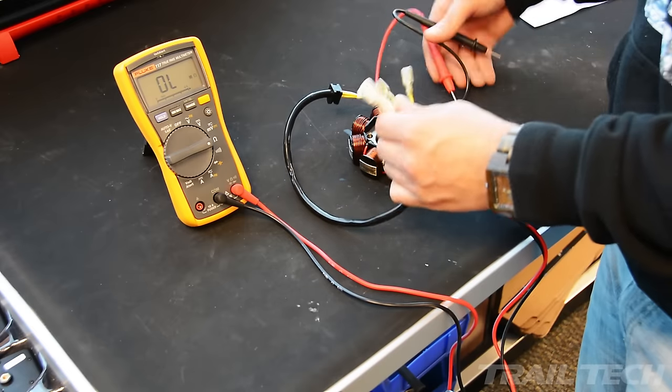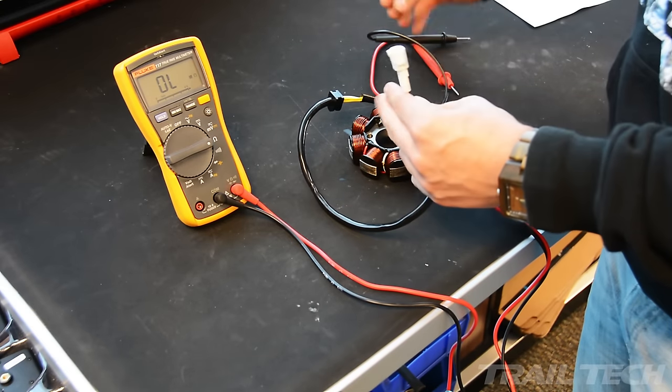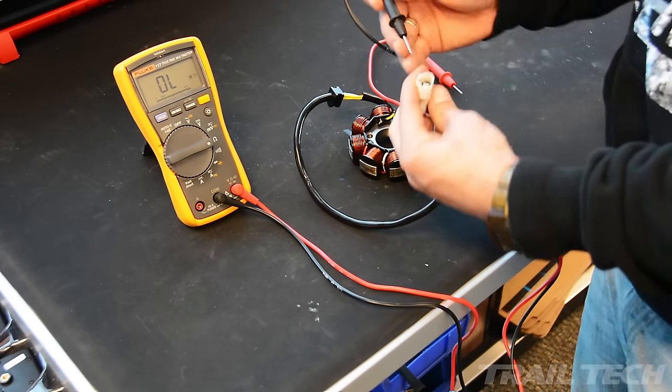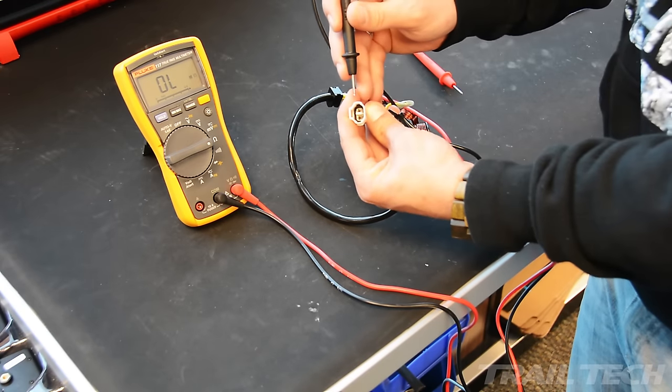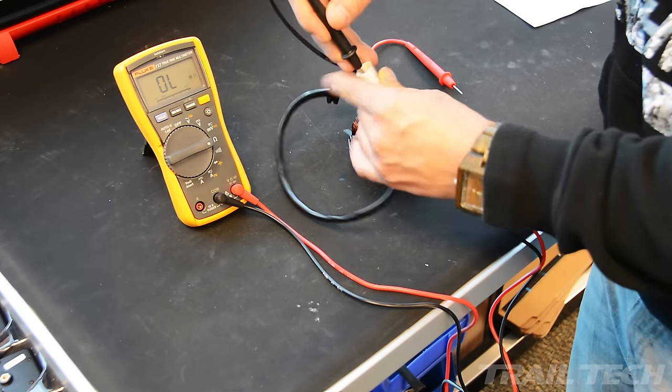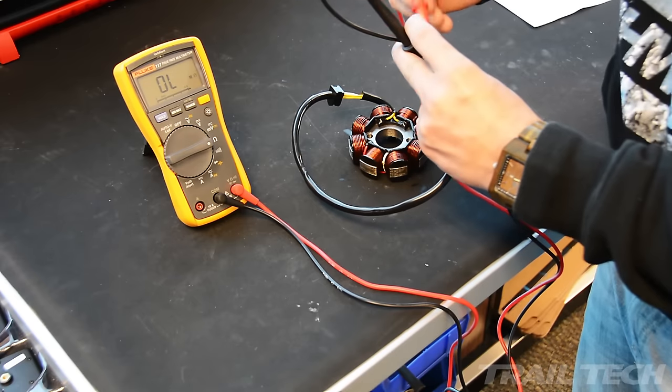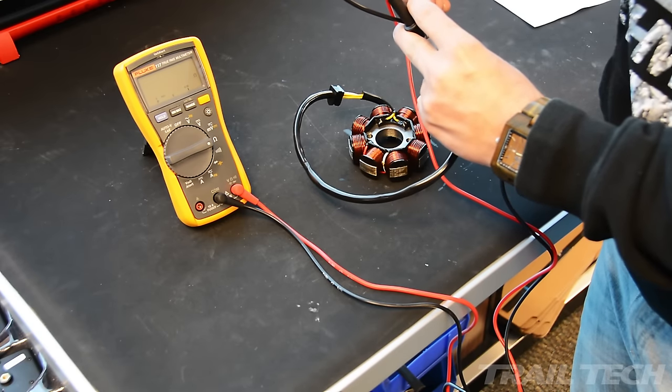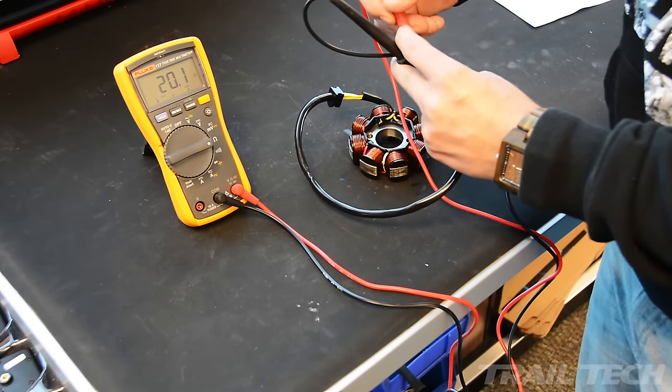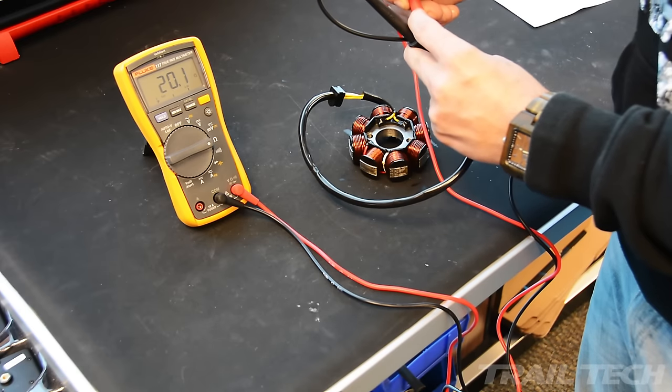Now, we're going to move over and check the ignition circuit. Again, this is a little bit tricky because you have to get two probes in here. But just basically wedge one and touch with the other. Make sure you have a good contact to get that nice reading there. And it looks like we're at 20.1 ohms.